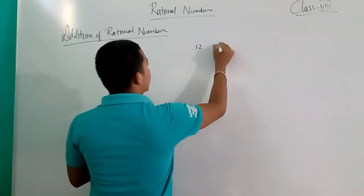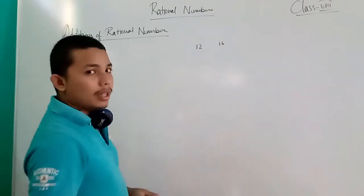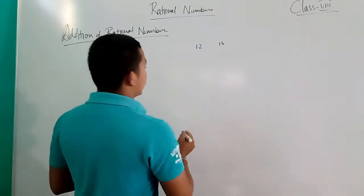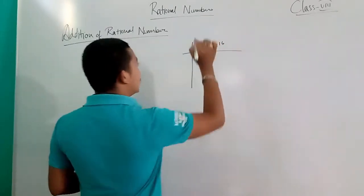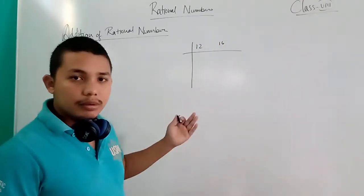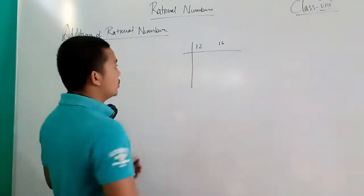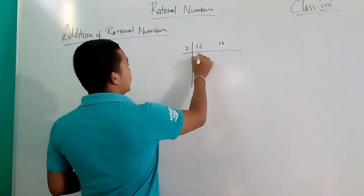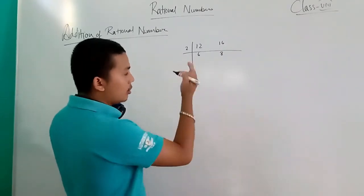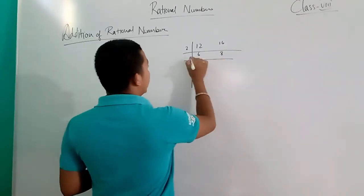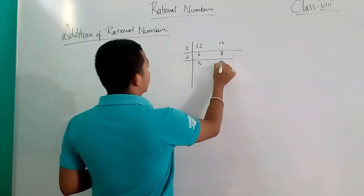The rational numbers are 12 and 16. 2×6 or 12, 2×8 or 16.